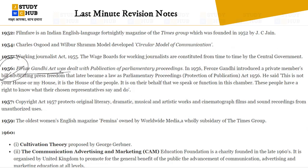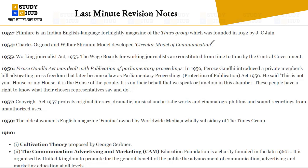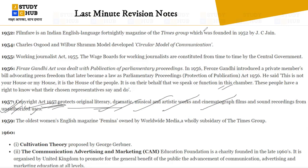In 1956, the Feroz Gandhi Act dealt with publication of parliamentary proceedings. Feroz Gandhi introduced a private member's bill, also known as the Parliamentary Proceedings (Protection of Publication) Act. In 1957, the Copyright Act protects literary, dramatic, musical, artistic work, cinematography films, and sound recordings from unauthorized use.